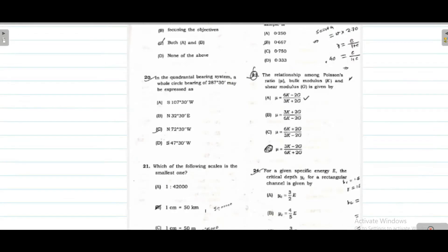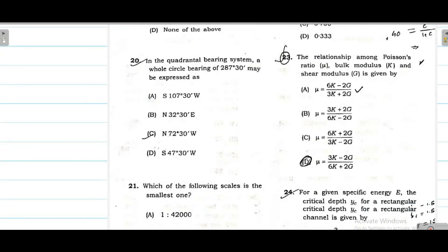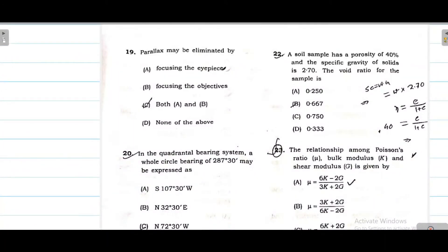Next question is about parallax. Parallax means the apparent movement of the objective. Parallax can be eliminated by focusing the eyepiece and focusing the objective. You can do both. This question is from surveying.